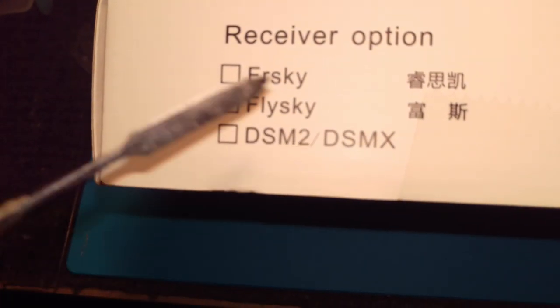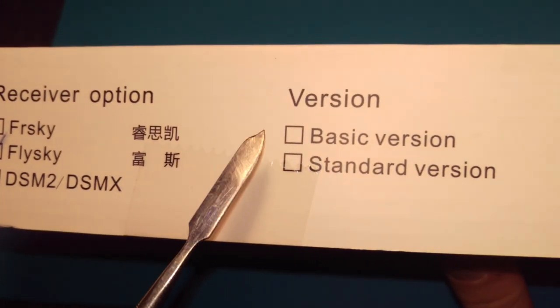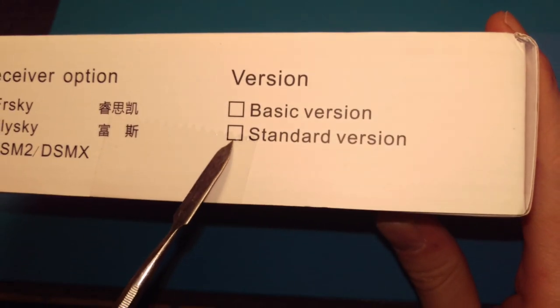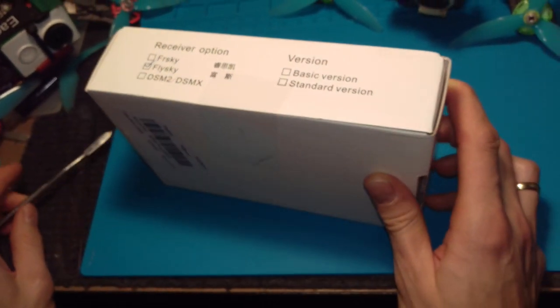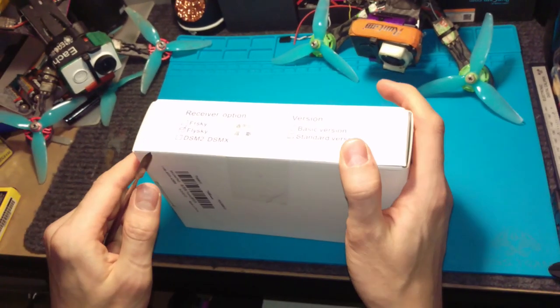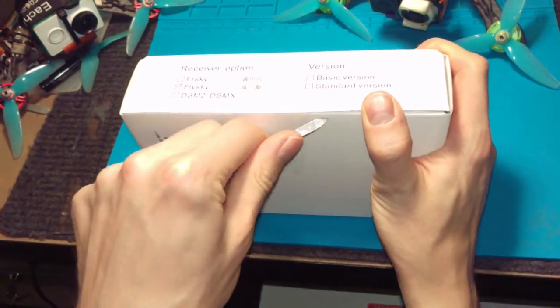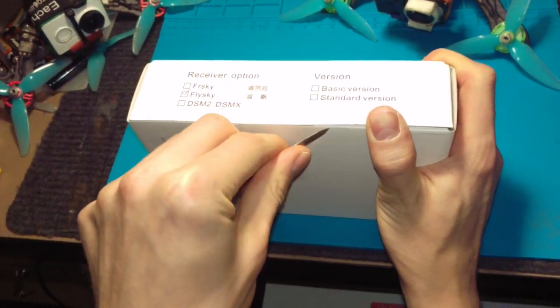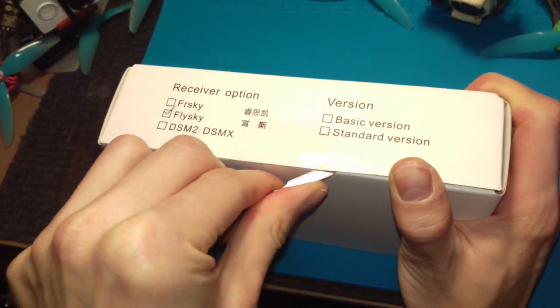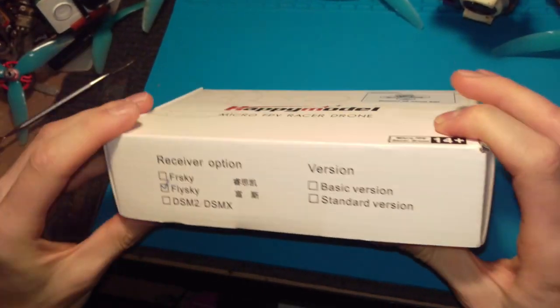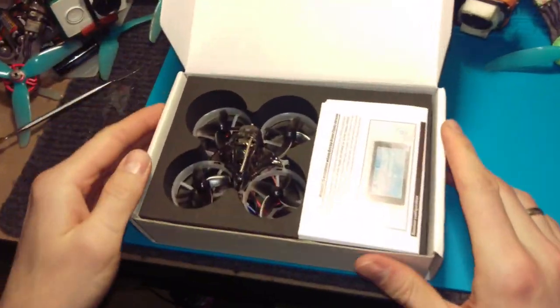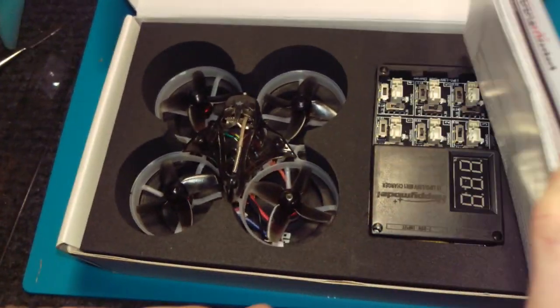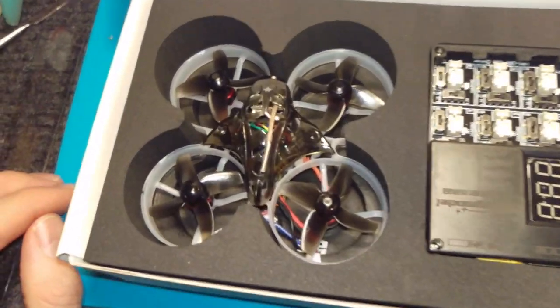This should be marked as the standard version with a better charger, because the basic version has just a very simple charger. I received the box today, so let's have a look. It's got a seal. Let's see what's inside - okay, it comes with black propellers.